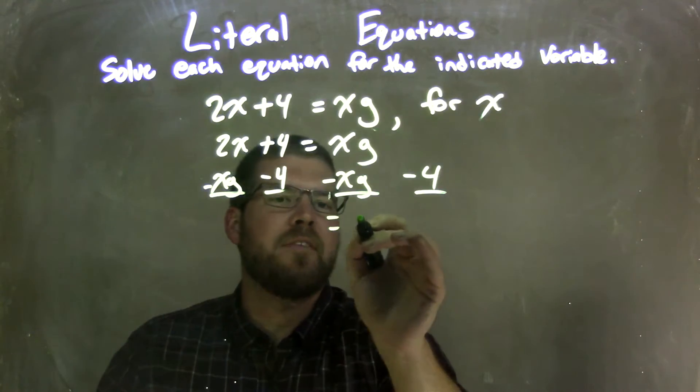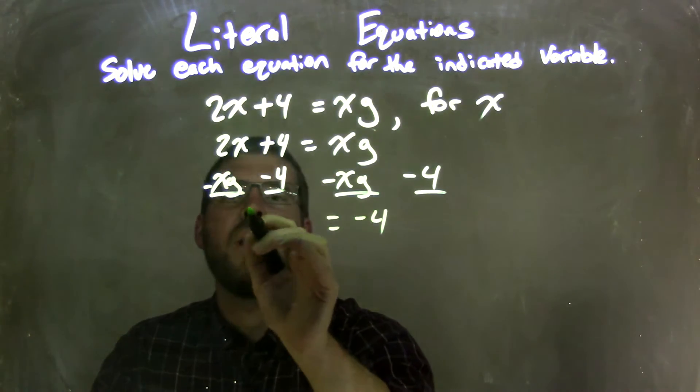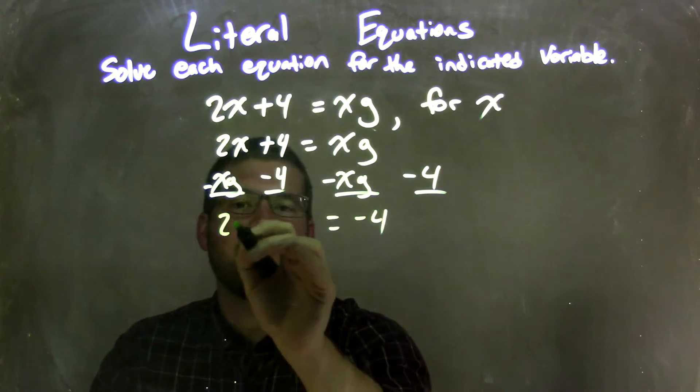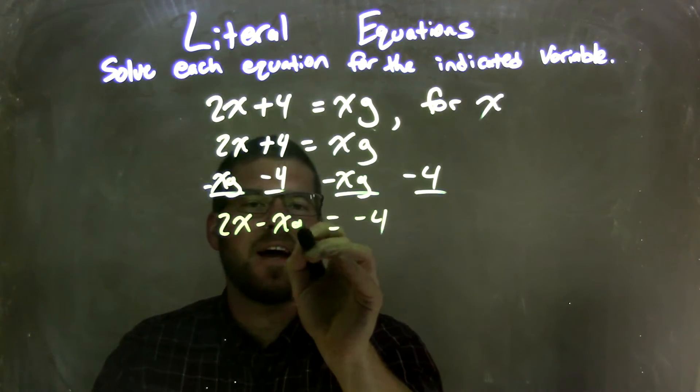So on the right here I have a negative 4, and on the left, well, they're not like terms, so I'm going to just leave it separate: 2x minus x times g.